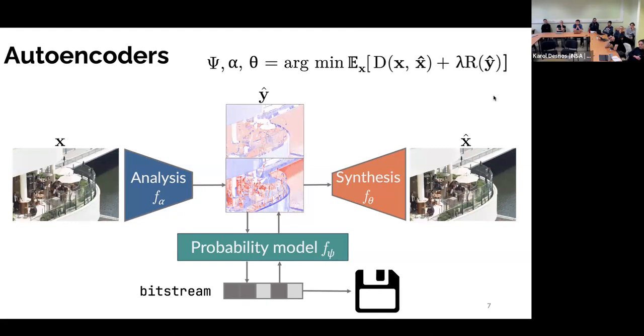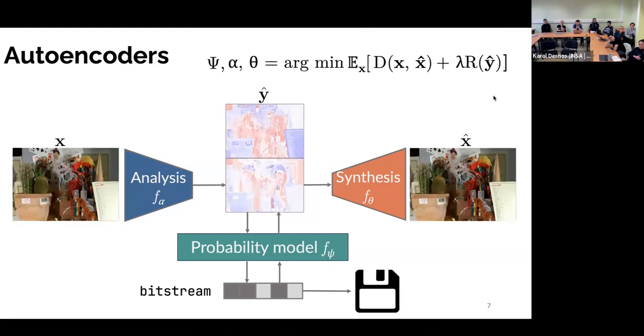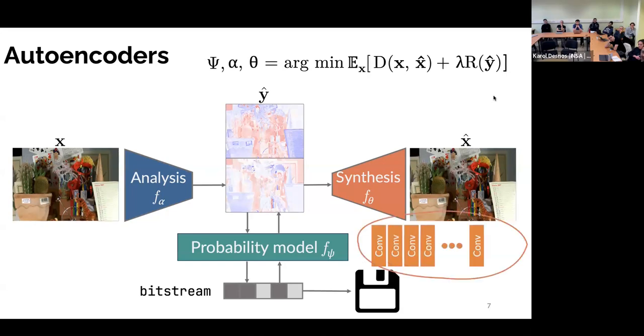Actually, what we do when we train an autoencoder is we train an autoencoder on many images. So we take several thousand of images and we try to minimize the average rate distortion. Just to give a sense about how many parameters we usually have in, for instance, the synthesis transform, it would be the same thing for the analysis or the probability. It's a stack of convolutions with millions or dozens or hundreds, maybe millions of parameters.